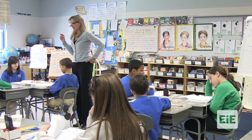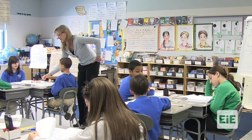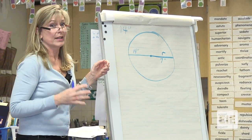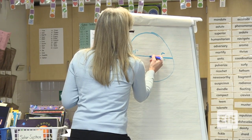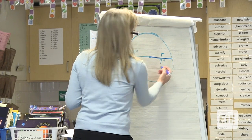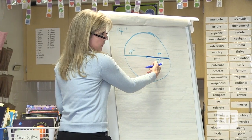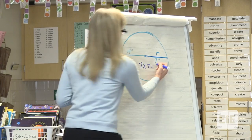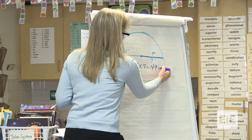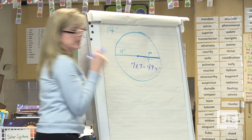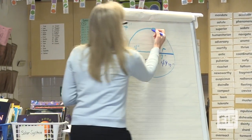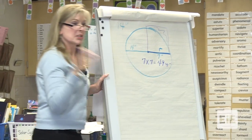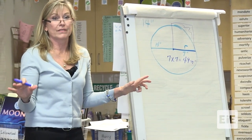We're going to find the area using radius times radius. We know that's not technically how you get the area of a circle, but for this activity, that's how we're going to find the area of the canopy. So for example, 7 times 7 equals 49 — that would be 49 square inches. We know it's a little off because it's not a square, but let's make our life easier and not use the full formula.